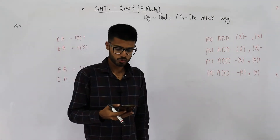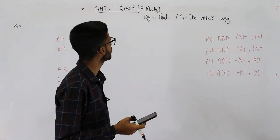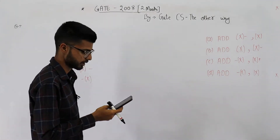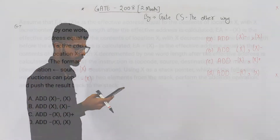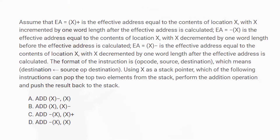Welcome back. This is a 2-marks question from the GATE 2008 exam. Let's read the statement. Assume that EA = x+ means the effective address equals the contents of location x, with x incremented by one word length after the effective address is calculated.